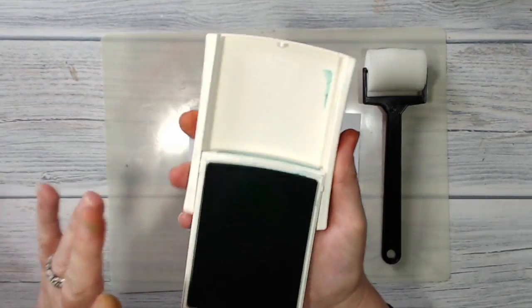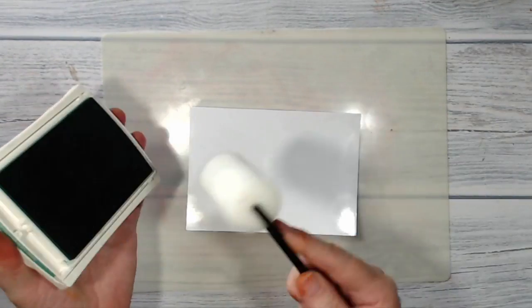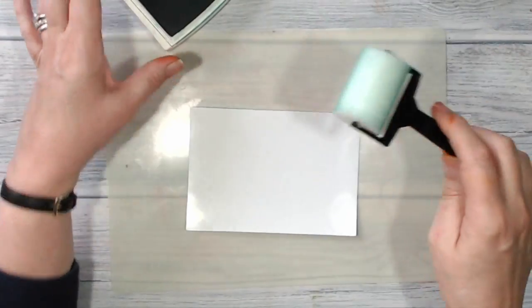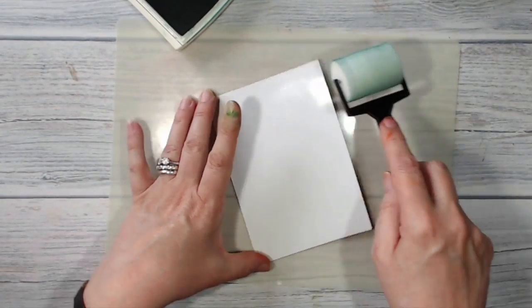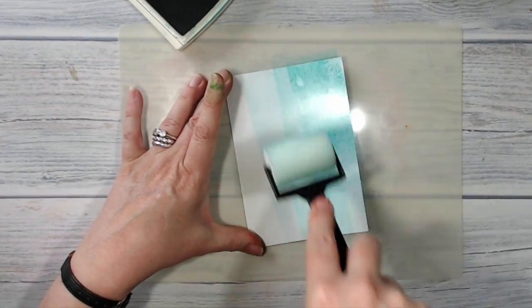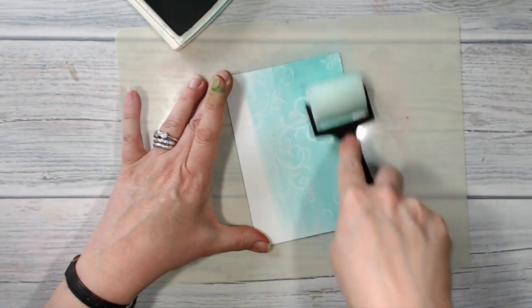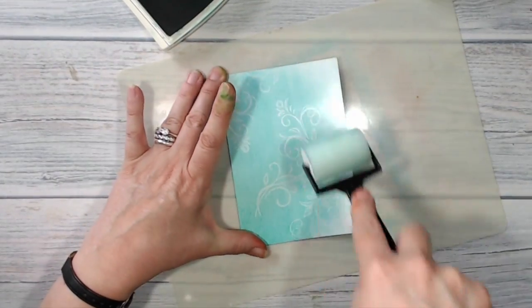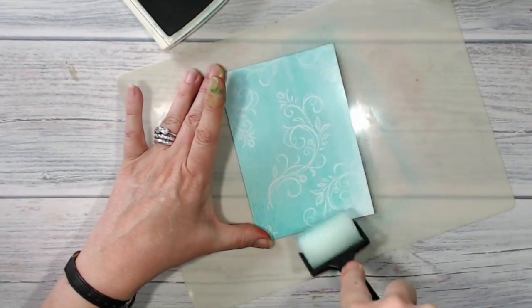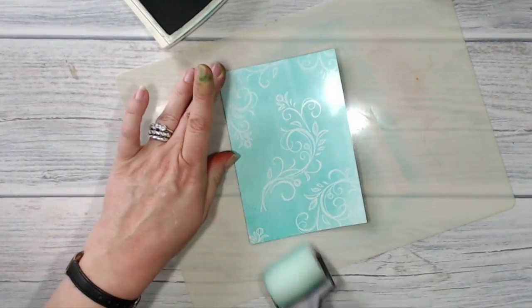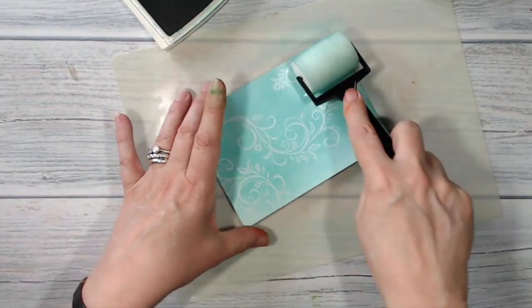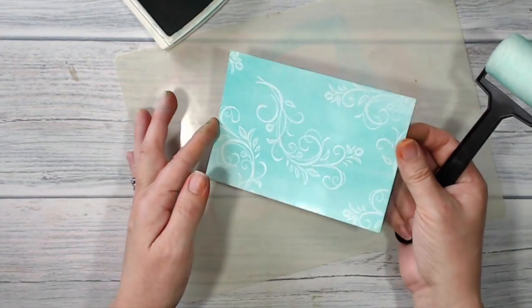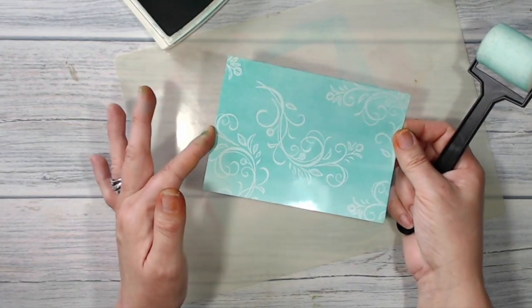Now I have one of my sponge rollers and I have Bermuda Bay ink, and I'm loading up my sponge roller with my ink. I'm now going to just roll across the top of my card, and at first it looks like oh gosh nothing's happening, but then you can see the pattern begins to emerge. And you get this lovely very subtle background. Isn't that pretty?